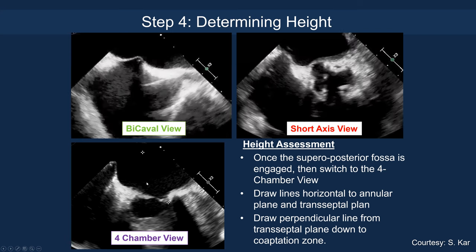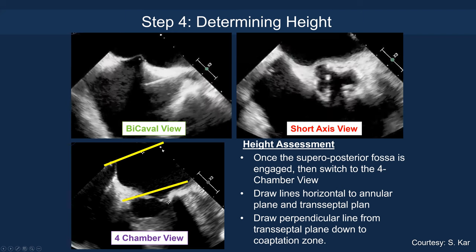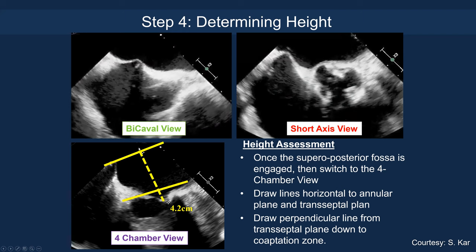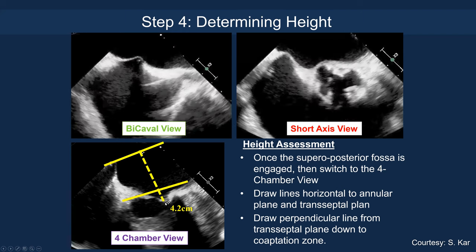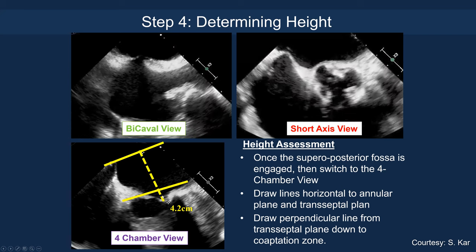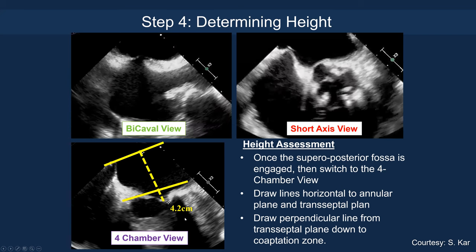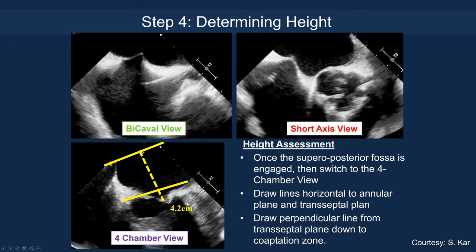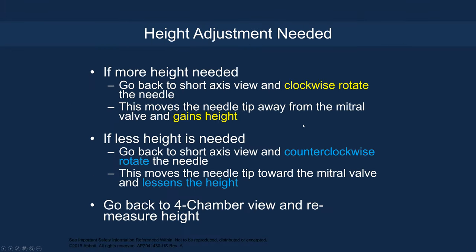On the four-chamber view, you see the tenting and can measure perpendicular to the mitral annulus. You must measure in a perpendicular manner rather than oblique, as an oblique measurement will overestimate the actual transeptal height. If you need more height, go back to the short-axis view and clockwise rotate the needle and system to rotate the catheter posteriorly away from the mitral and aortic valve to gain height. If you need to lose height, counter-clock the needle to reduce height, then remeasure on the four-chamber view.